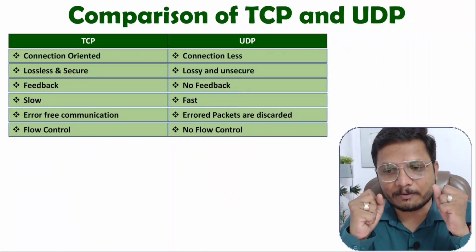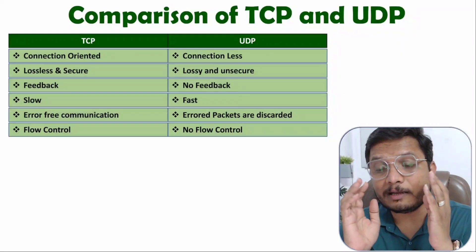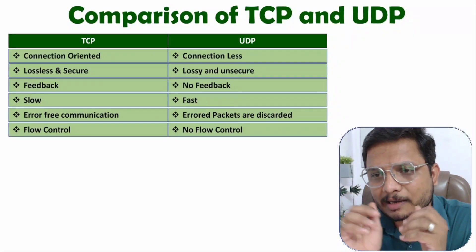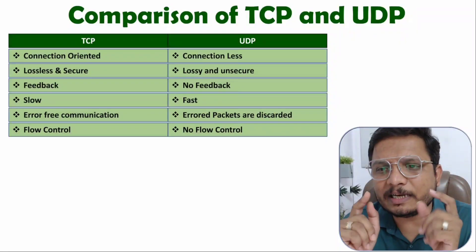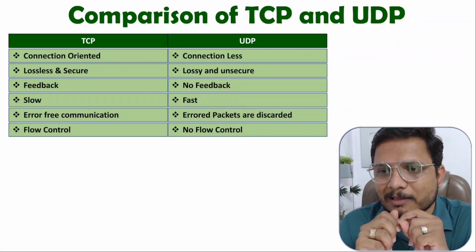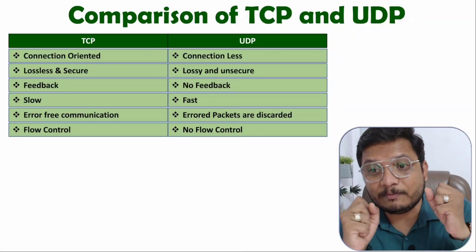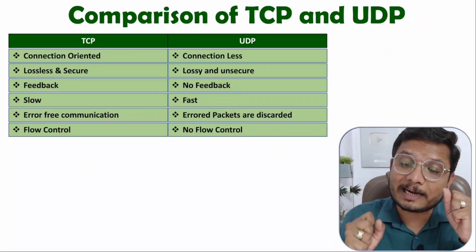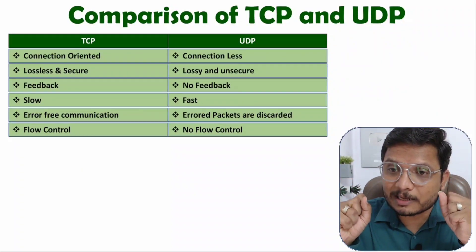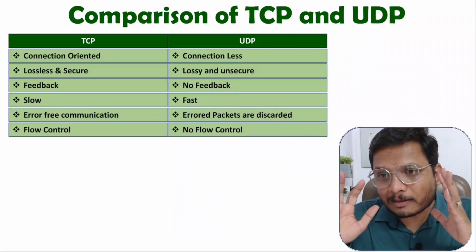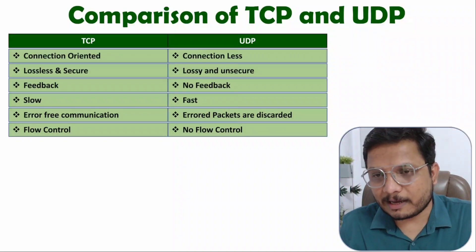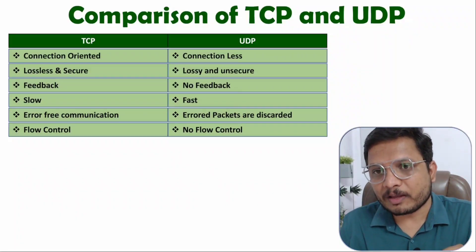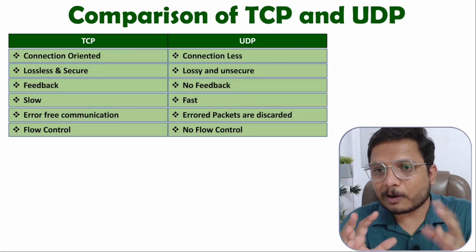Consider a transmitter capable of handling 10 Mbps speed and a receiver with a handling capacity of only 1 Mbps. If the transmitter sends data at 10 Mbps but the receiver can only handle 1 Mbps, the receiver cannot take that 10 Mbps data. So there is a need for flow control, which TCP provides, while UDP does not.